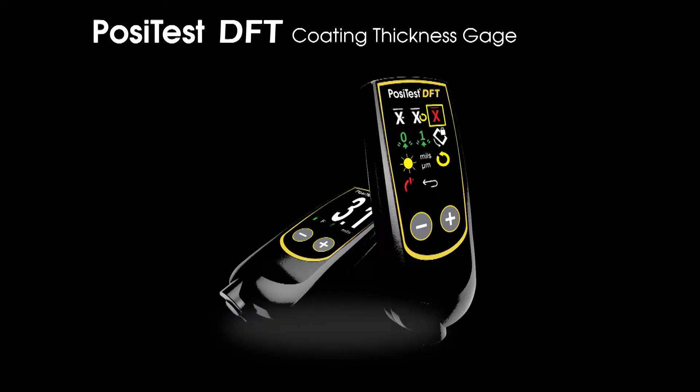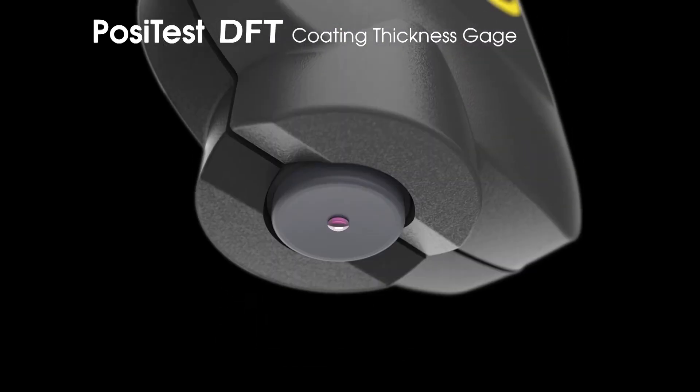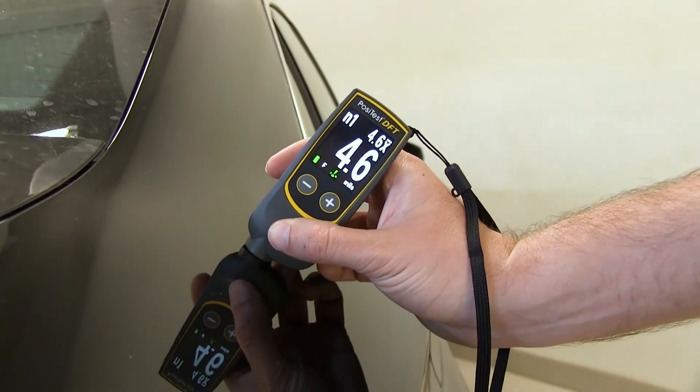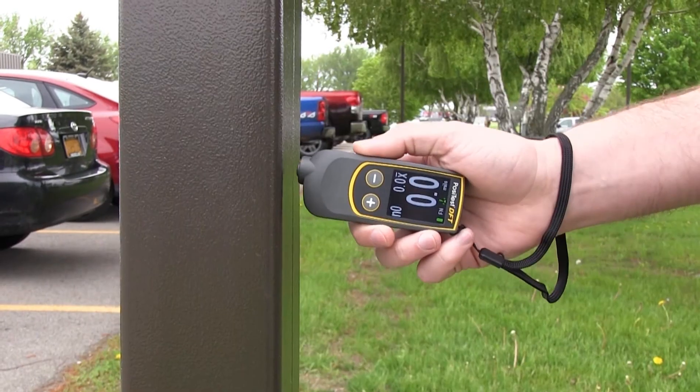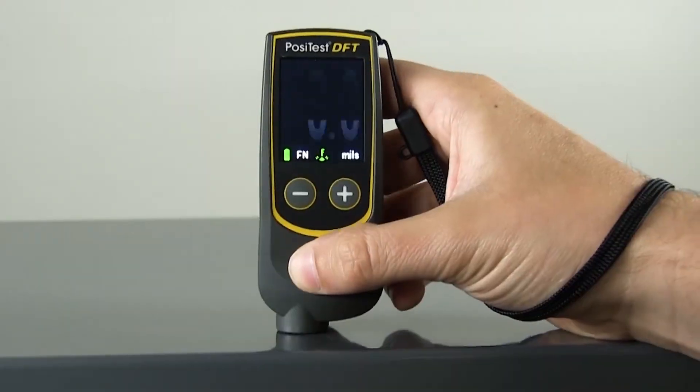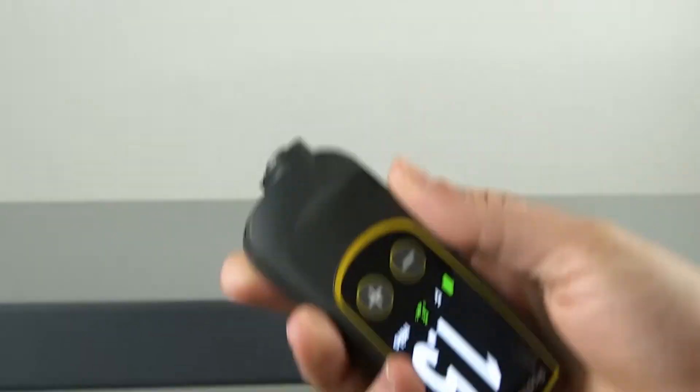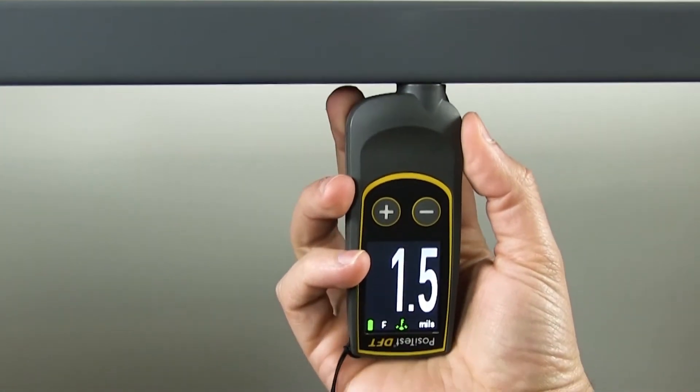The Positest DFT features the same probe technology as the Positector 6000 in a simple, economical format. It's ideal for users who want to measure coating thickness up to 1 mm or 40 mils on metal substrates and don't need the memory, software, or probe interchangeability of the Positector platform.